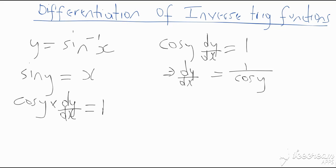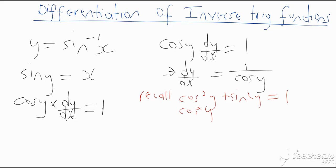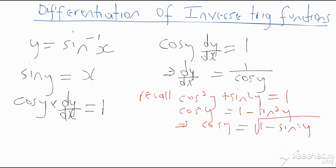We know that cos²(y) + sin²(y) = 1, which means cos²(y) = 1 − sin²(y), and therefore cos(y) = √(1 − sin²(y)).